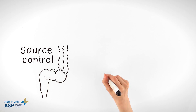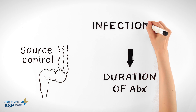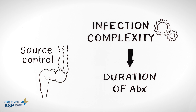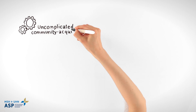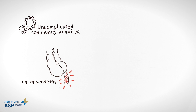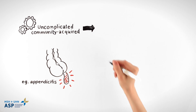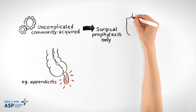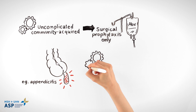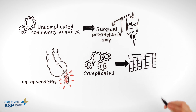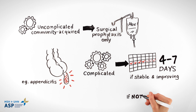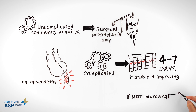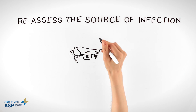Once source control is achieved, duration of antibiotics is guided by infection complexity. For uncomplicated community-acquired intra-abdominal infections, such as non-perforated appendicitis, only surgical prophylaxis is needed. Complicated infections require four to seven days of therapy if the patient is stable and improving. For a patient who does not improve, rather than prolonging the course of antibiotics, reassess for source control.